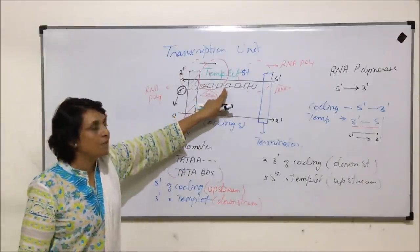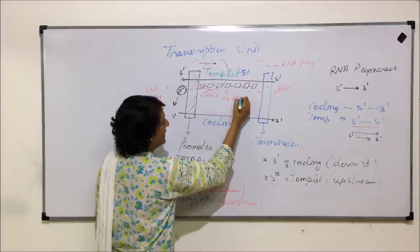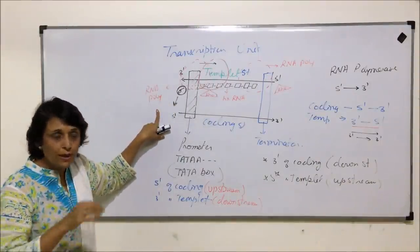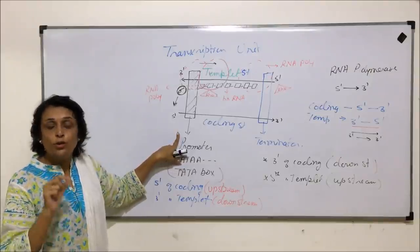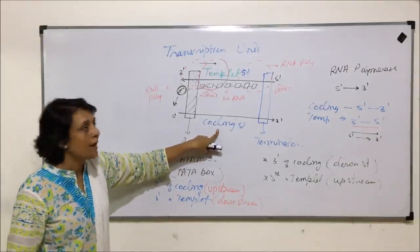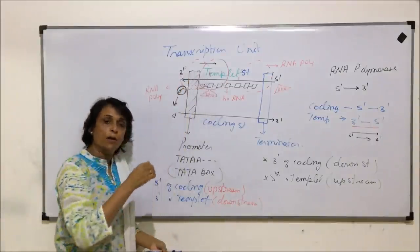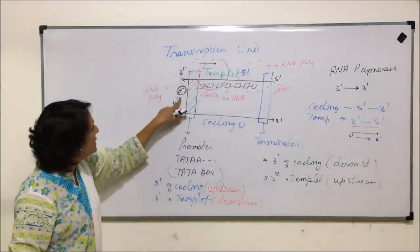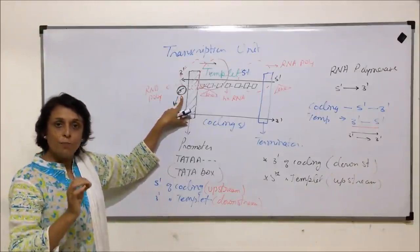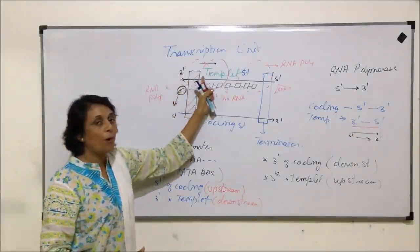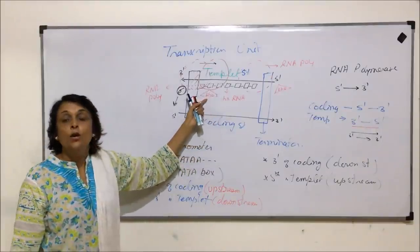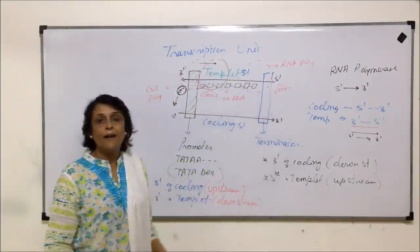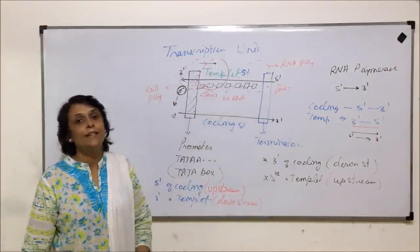When the RNA polymerase reaches the terminator, the rho factor detaches and all components separate. The newly synthesized strand is first hnRNA, which then undergoes splicing and processing to form mRNA. So in the transcription unit, RNA polymerase binds at the promoter upstream, sigma factor joins for initiation, sigma detaches, rho factor attaches for elongation, and when polymerase reaches the terminator gene, rho factor terminates mRNA synthesis.